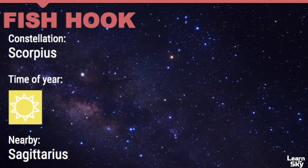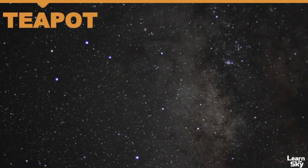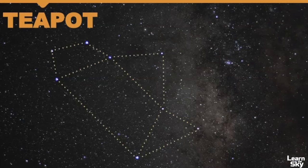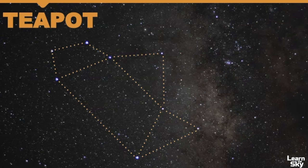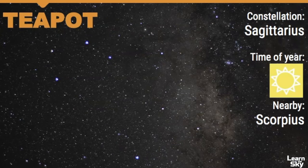Depending on where you are in the northern hemisphere, this asterism may be easy for you to see or it might be a little difficult if you're farther away from the equator. Next we have the Teapot, which is a small portion of the constellation known as Sagittarius, and this one is really easy to point out in the summer sky if you know where to look. If you're lucky enough to be viewing the stars in a dark sky area, the Milky Way is right here and the Teapot asterism is really close to the brightest areas of the Milky Way galaxy. You can use the Teapot to help you find where Sagittarius is and also where Scorpius is.